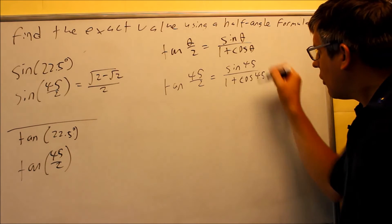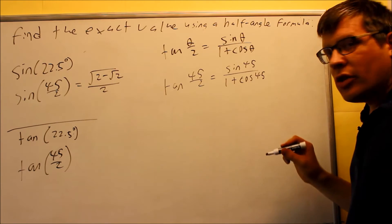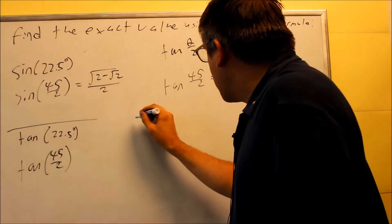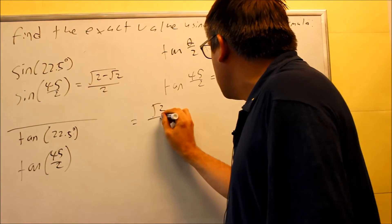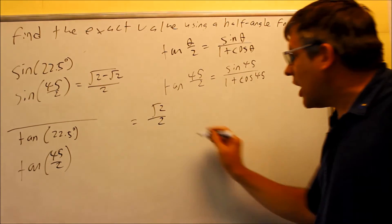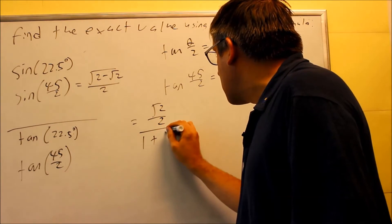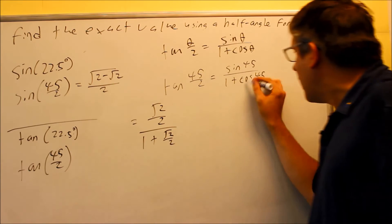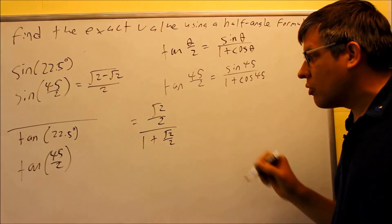You want to put the value in from your table into each of those. So we're going to get square root of 2 over 2. That's the exact value for sine 45 on the bottom. 1 plus square root of 2 over 2. That's also the value for cosine 45 is radical 2 over 2.